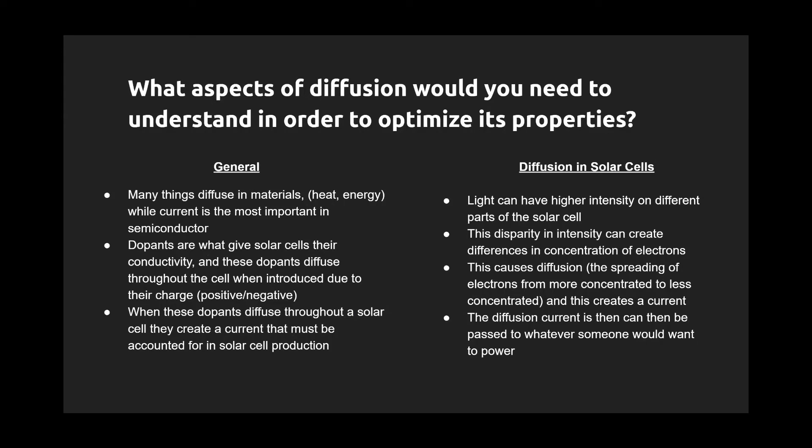Some general things to consider with diffusion: many things diffuse in materials such as heat and energy, but current is the most important in a semiconductor. Dopants are what give cells this conductivity. These dopants diffuse throughout the cells and when introduced to their charge, whether positive or negative, they create a current that must be accounted for in solar cell production.